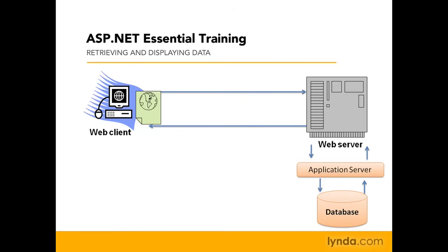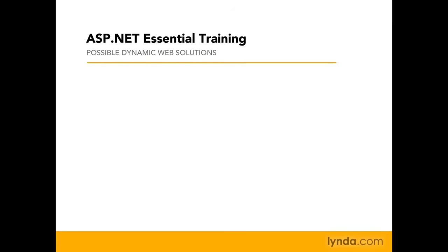There are many software packages that you can select from as application servers. If you're watching this video series, you've probably already selected ASP.NET, or you're evaluating it for possible use in your organization. Microsoft Active Server Pages, or ASP, is another option — it's an older version of Microsoft's application server technology. You can also select Adobe ColdFusion, a cross-operating system product that works on Windows, Mac, and Linux, and uses its own proprietary language, ColdFusion Markup Language.